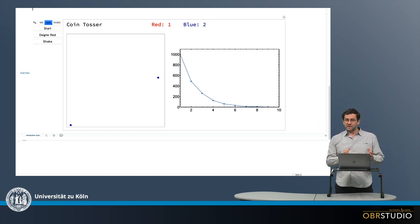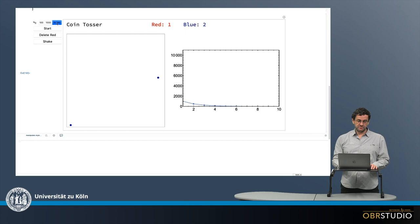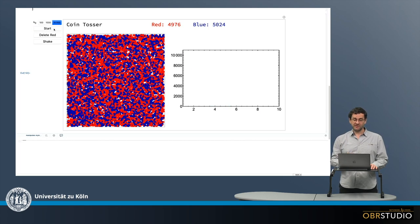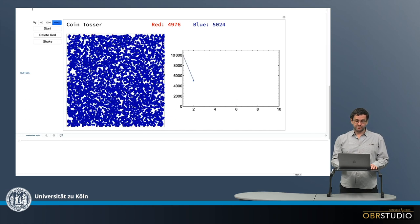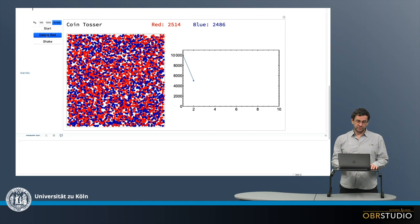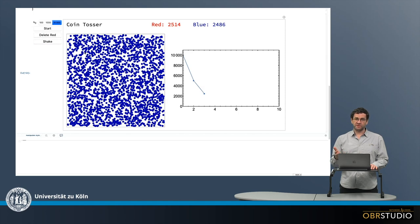Now let's try this with more initial coins. So let's say we have initially not 1,000 but 10,000 coins. And then again we delete the red ones and the curve looks pretty much the same. And this is what we would expect because this is what exponential growth or decrease means.